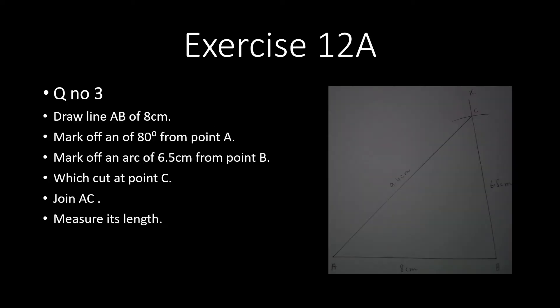Assalamualaikum students, today we have to solve question number 3 of Exercise 12A. The statement of this question is: construct angle ABC such that AB is equal to 8 centimeters, BC is equal to 6.5 centimeters, and ABC is equal to 80 degrees. We have to draw an angle at point B which is 80 degrees and write down the length of AC.